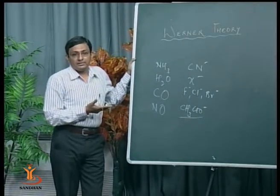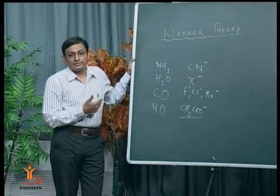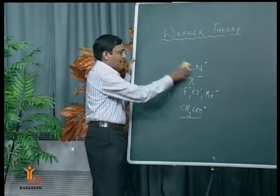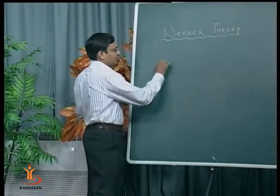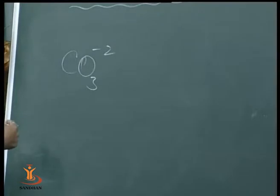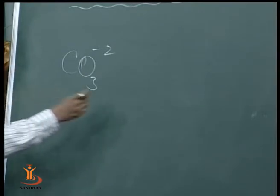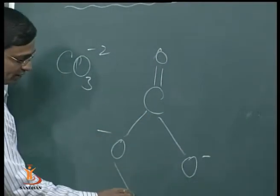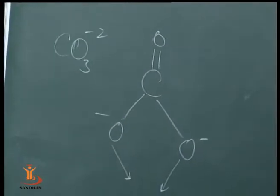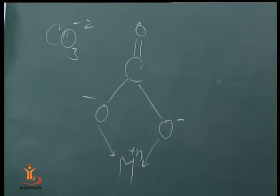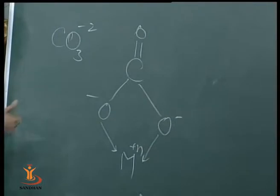A ligand which can donate two electron pairs to a metal ion acts as a bidentate ligand. Bidentate ligands can be neutral or anion. For example, carbonate ion (CO₃²⁻) is a bidentate anion ligand — it has two coordinate sites, meaning a single ligand has the tendency to form two coordinate covalent bonds with a metal ion. Ethylenediamine is a bidentate neutral ligand — both nitrogen atoms have lone pairs and form coordinate bonds with the metal ion.